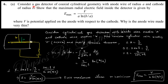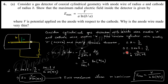Let's start today's discussion with question number 6a, which says: consider a gas detector of coaxial cylindrical geometry with an anode wire of radius a (the positive terminal) and a cathode (the negative terminal) with radius b, such that the maximum radial electric field inside the detector is given. We consider a cylindrical gas chamber where the anode has radius a and the cathode — the wall of the chamber — has radius b. Using Gauss's theorem, E into area equals q over ε₀, and the area is 2πrl, giving us the expression for E.